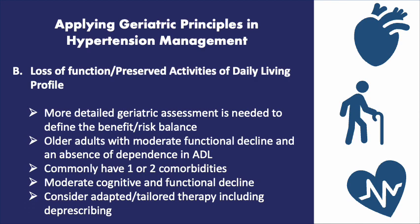For the loss of function/preserved activities of daily living profile, a more detailed geriatric assessment is needed to define the benefits/risk balance as well as requirements for tailoring the various therapeutic strategies. They include older adults with moderate functional decline and absence of dependence in activities of daily living, commonly with one or two comorbidities and moderate cognitive and functional decline. One should consider adopted or tailored therapy, including deprescribing.